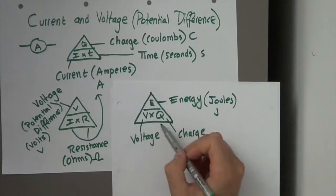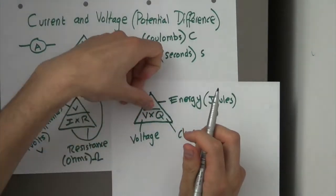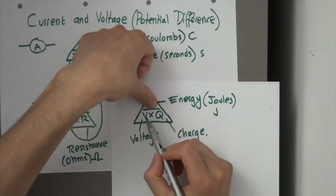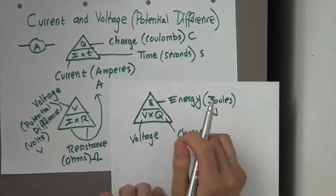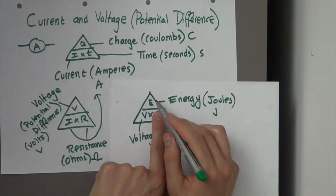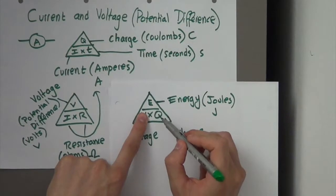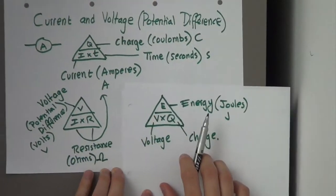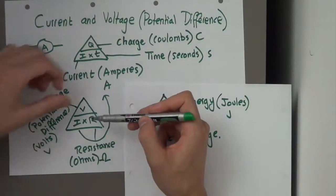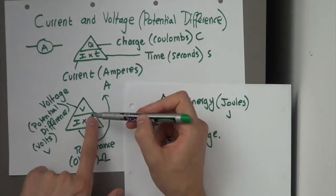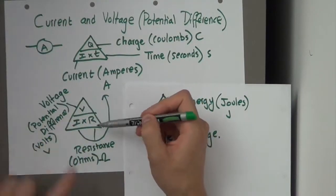So, there's this equation to remember. Again, how do we use it? We cover up E. If we want to work out energy, then it's voltage times charge. Or if you want to work out Q, it's energy divided by voltage. If you want to work out voltage, it's energy divided by charge. Same thing with this equation. Voltage, I times R, R equals V over I, I equals V over R.